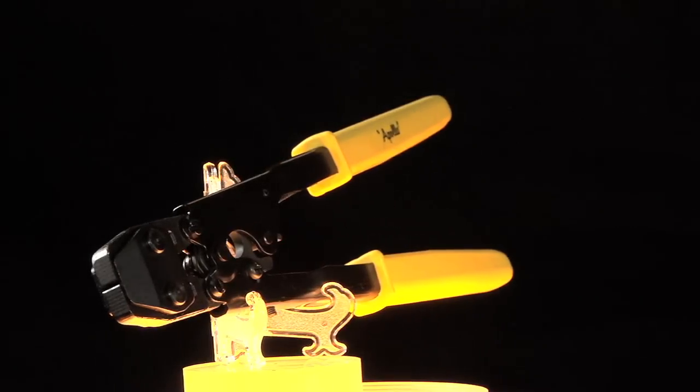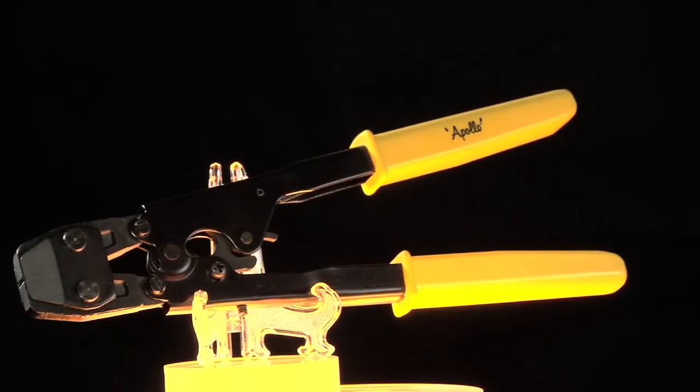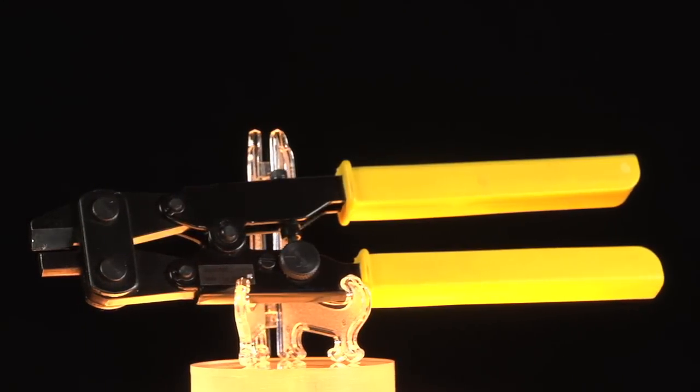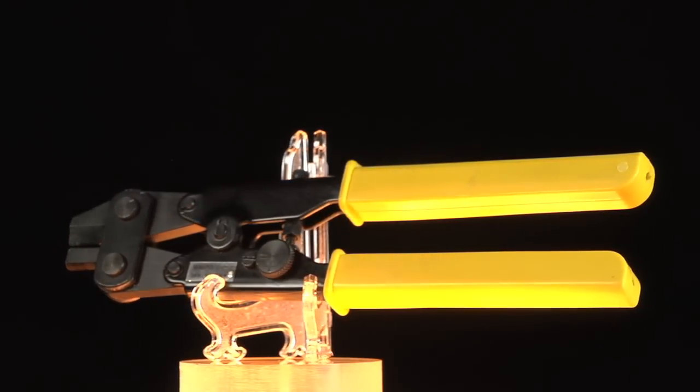Use the Apollo PEX pinch clamp tool to fasten the pinch clamp around the tubing and fitting. The Apollo PEX ring removal tool is available and can remove both crimp rings and pinch clamps.